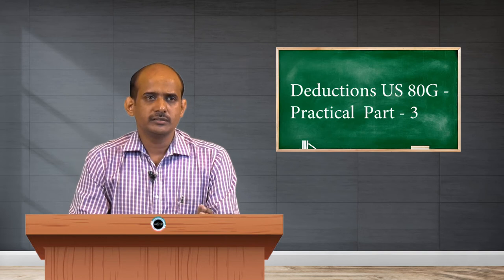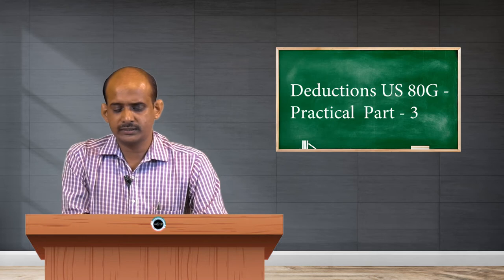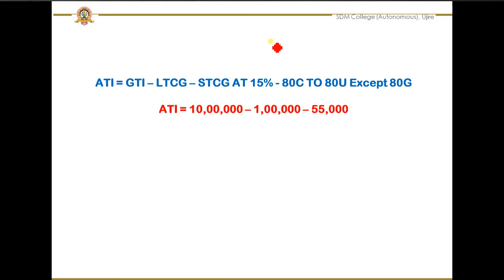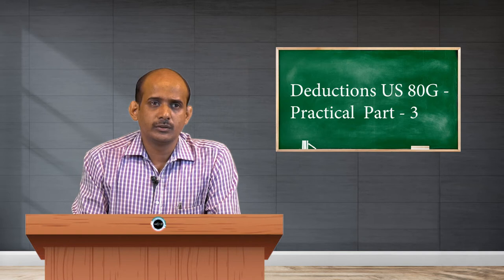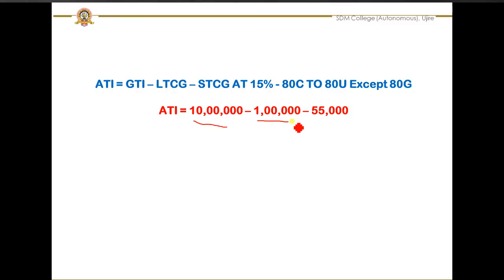As per that, we calculate the adjusted total income. The calculation starts with gross total income of 10 lakh. We do not have long-term capital gain information in the question. For short-term capital gain at 15 percent, we have that information — there is a short-term capital gain at 15 percent worth rupees 1 lakh, so I have deducted that 1 lakh. Then 55,000 is deducted because we have already claimed 80D and 80E previously. As per the formula, any deductions claimed between 80C to 80U should be deducted. So 10 lakh minus 1 lakh minus 55,000 gives us an adjusted total income of rupees 8,45,000.